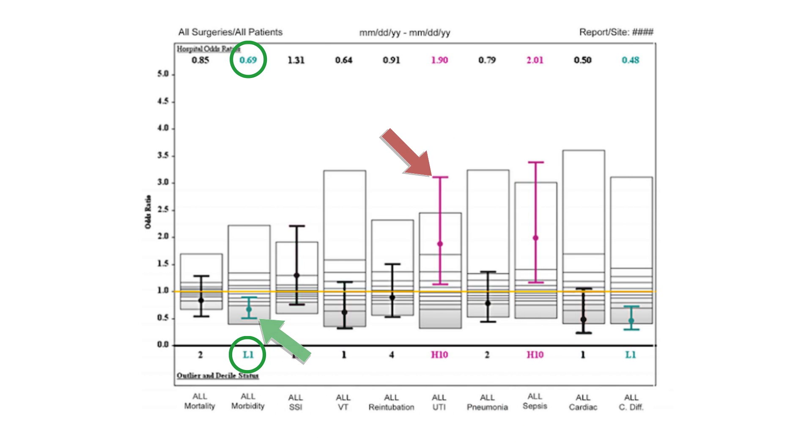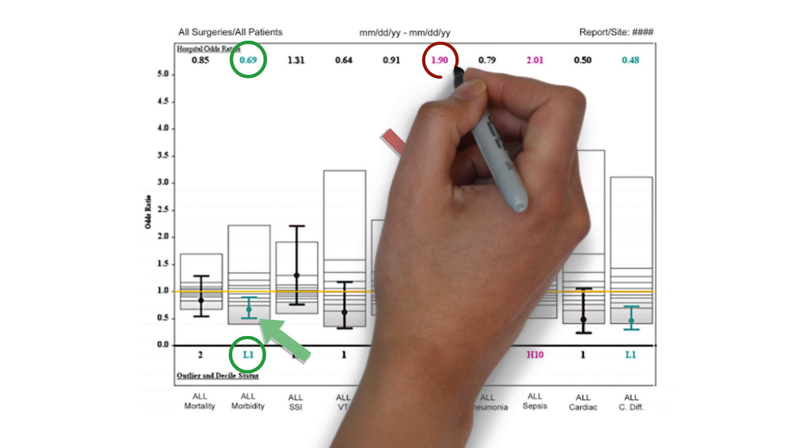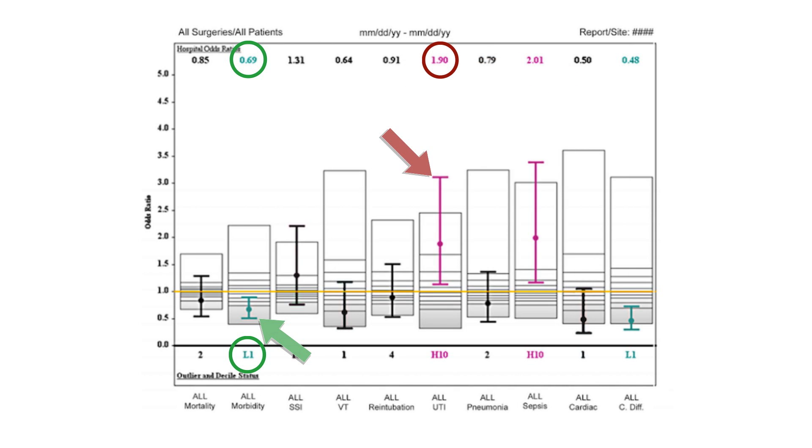If we now look at our data for all UTIs, you'll see that our data are in red, with an estimated odds ratio of 1.9. Remember, more than one is bad. As well, you'll see that our point estimate is in the tenth centile, which is bad.